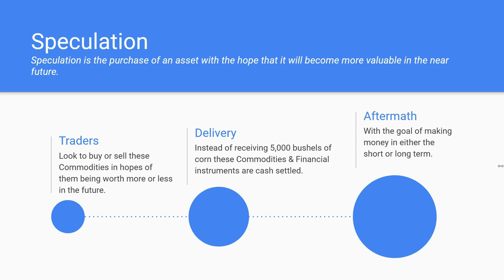Instead of receiving 5,000 bushels of corn, these commodities and financial instruments are cash settled. If you're a day trader, you'll obviously be cash settled at the end of the day. Things like the S&P 500 and NASDAQ are cash settled. With oil, corn, and pork bellies, you're not holding through the rollover period. If you are holding long term and approaching rollover, it would be very wise to reach out to your broker so you don't accidentally end up with 10,000 barrels of oil in your driveway.